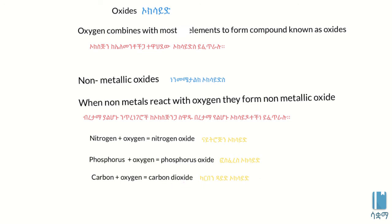When non-metals react with oxygen, they form non-metallic oxides. When oxygen reacts with metals, it forms metallic oxides. This is the key distinction between the two types of oxides.